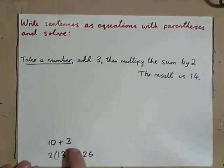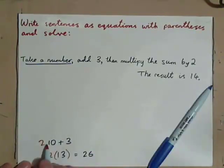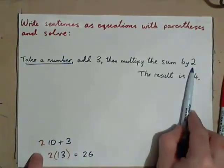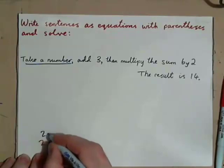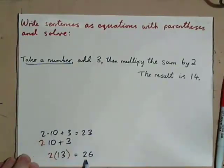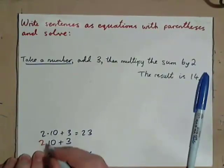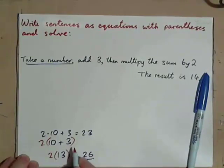Now, another way to do this is to do this. If you want to multiply the sum by 2, be careful, because this is wrong. If you just want 2 times 10, that's 20, plus 3, that gives 23, not 26, right? If you want to multiply 2 by the sum of 10 and 3, you've got to put parentheses around the 10 plus 3.